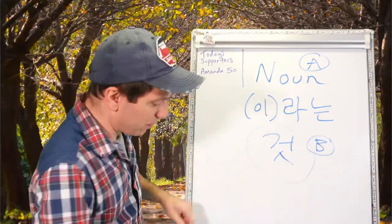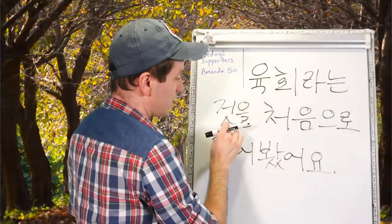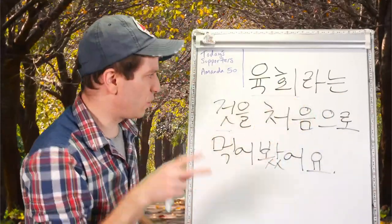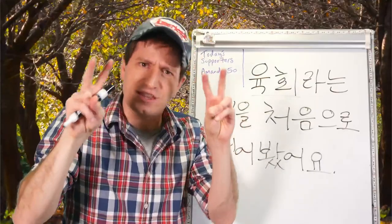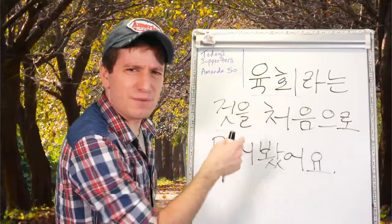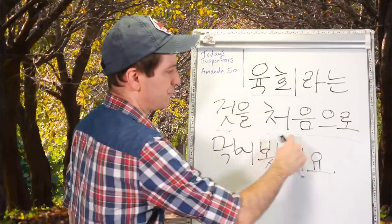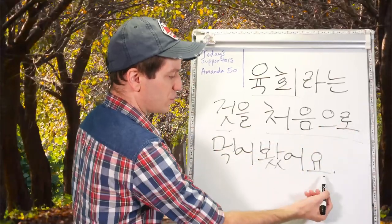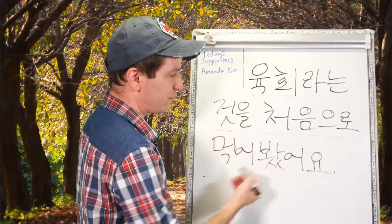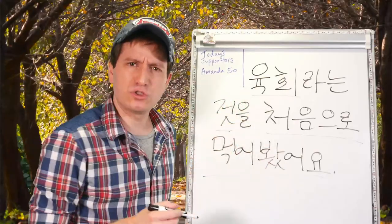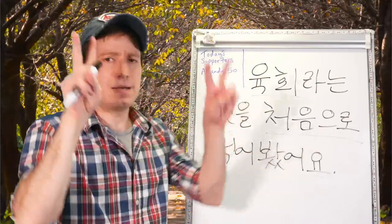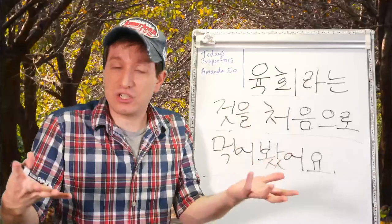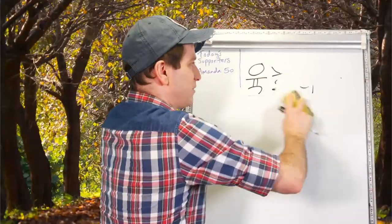Here's an example: 유케이라는 것 — a thing that is called 유케, a 유케 thing. I'm not saying it's food here, just that it's a thing called 유케. 처음으로 먹어봤어요 — I tried eating it for the first time. So I tried 유케 for the first time. You can translate it just like that, but we're not done with it.